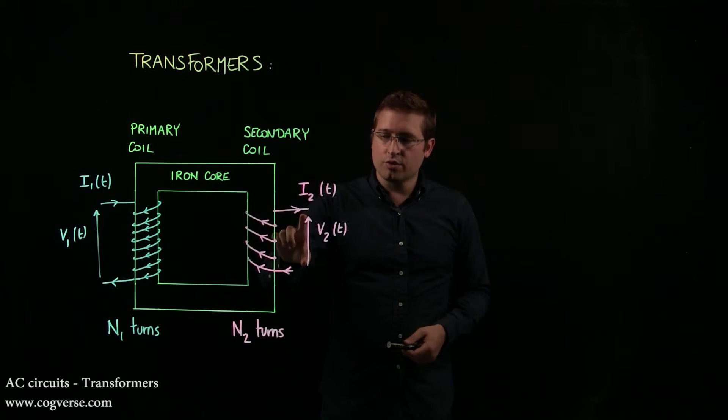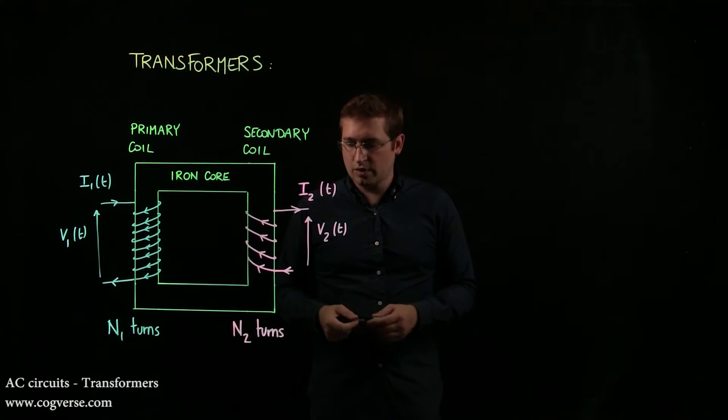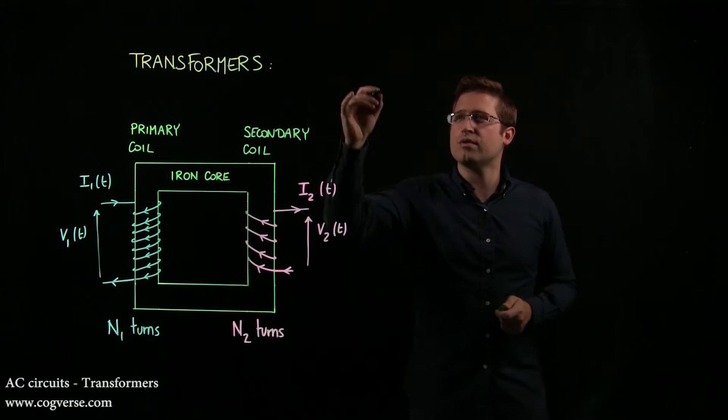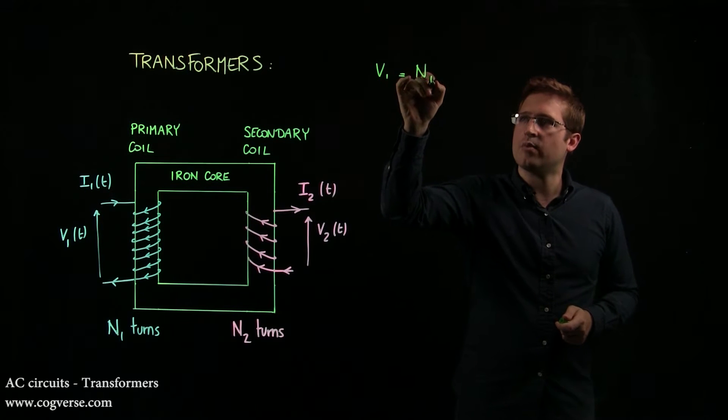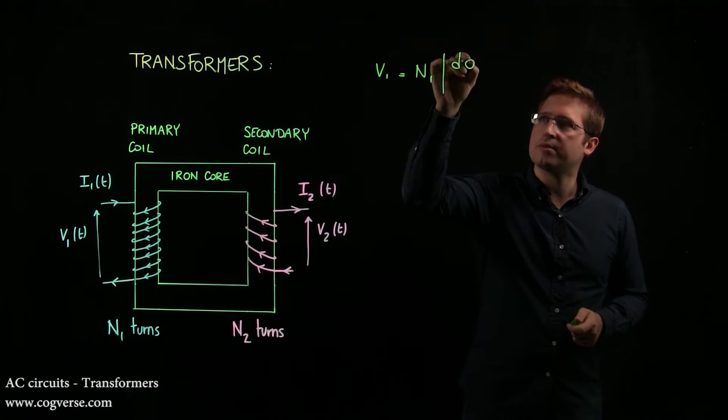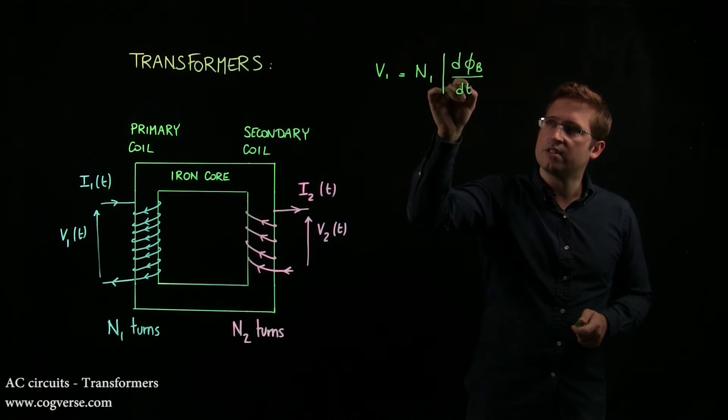And that induces V2 across the secondary coil. In fact, in magnitude, V1 is equal to N1 absolute value of d phi b over dt.